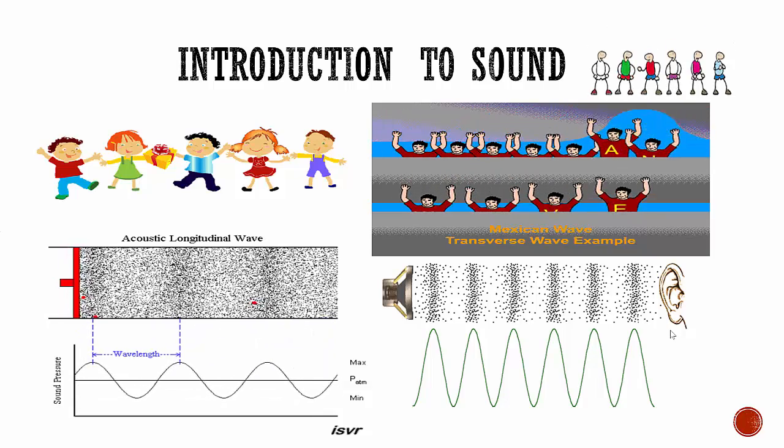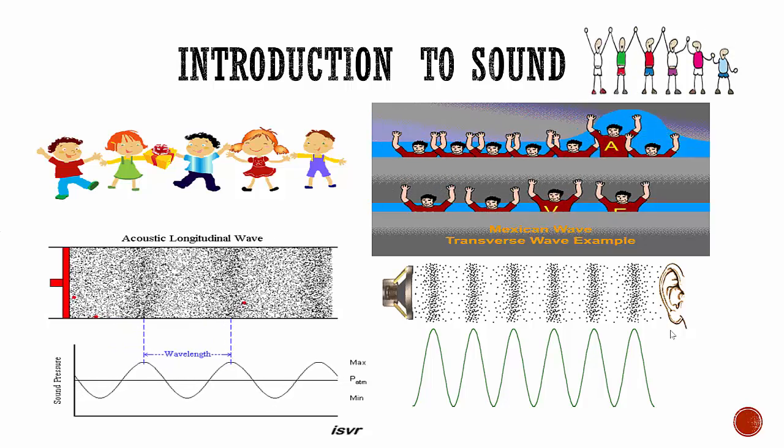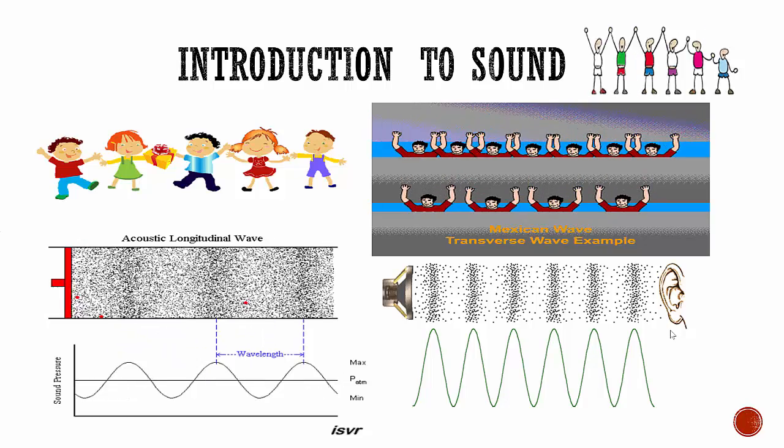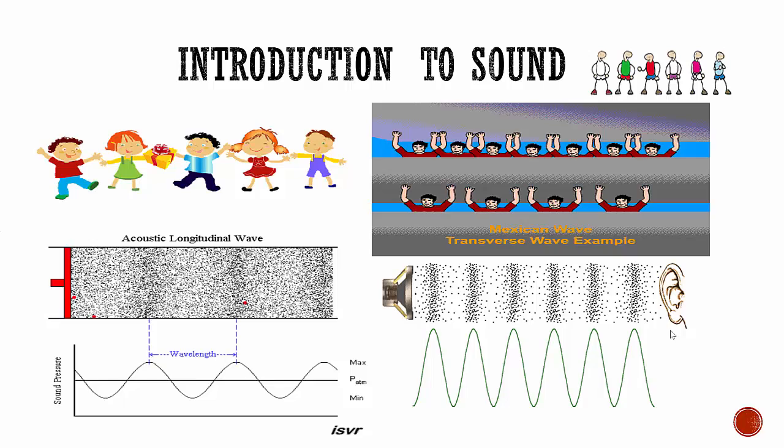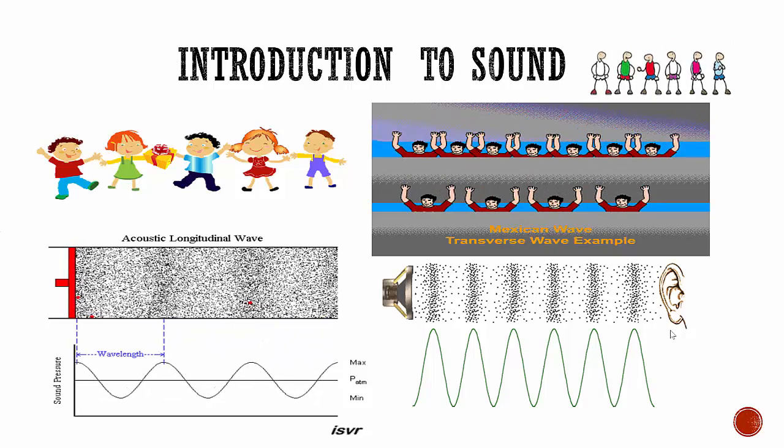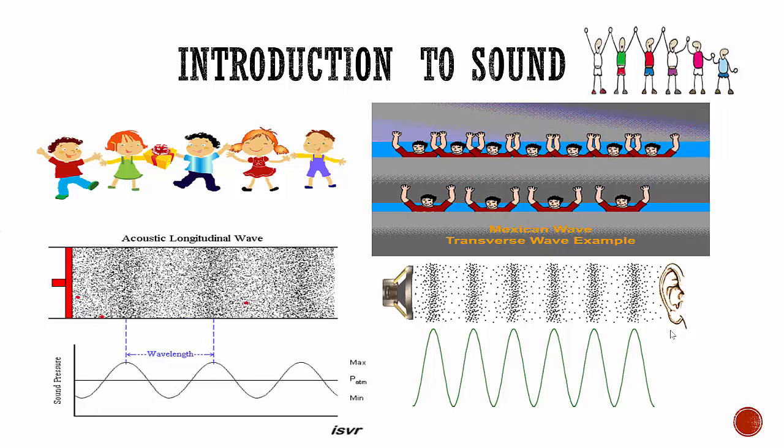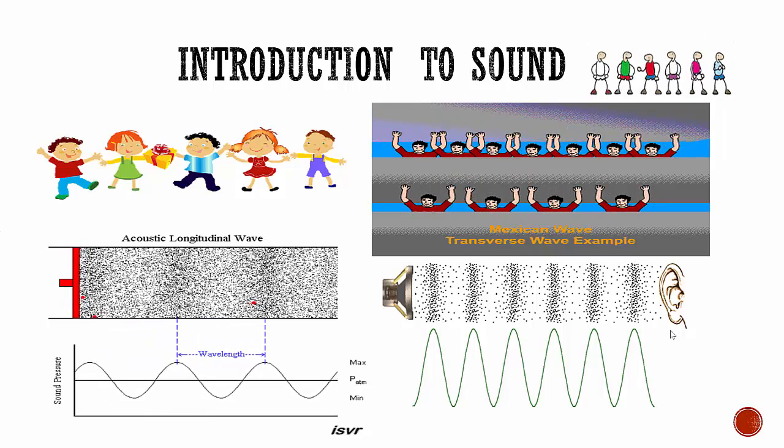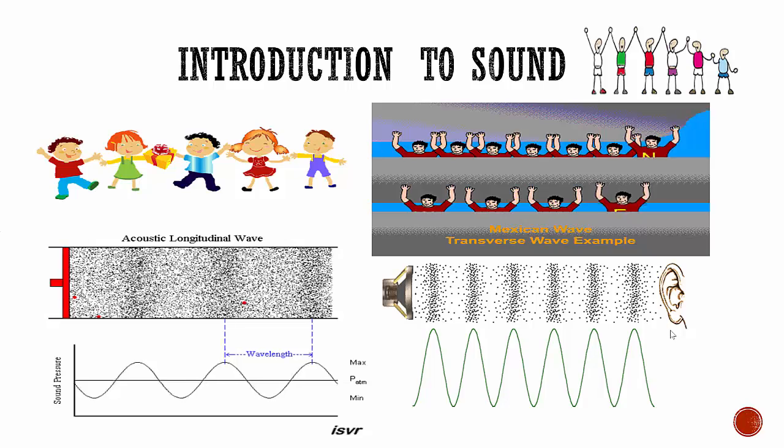Without vibration, the world would be silent. So if you shout in a vacuum place, you cannot hear the sound. How do vibrations travel and get to your ears? The vibrations that create sound must travel through a medium such as air, water or anything made up of molecules.